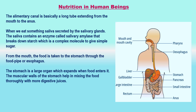Nutrition in Human Beings. The human digestive system consists of the alimentary canal and its associated glands. The organs in sequence are: mouth, oesophagus, stomach, small intestine, and large intestine. Associated glands include salivary glands, liver and pancreas. The mouth cavity contains teeth, tongue, and salivary glands. Teeth cut, chew and grind food, helping in physical digestion. Salivary glands produce saliva, and the tongue mixes saliva with food. Saliva contains the enzyme salivary amylase, which digests starch into sugar. The walls of the food pipe have muscles that contract and expand alternately, producing peristaltic movement, which pushes the slightly digested food into the stomach.